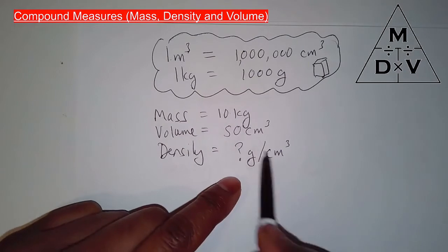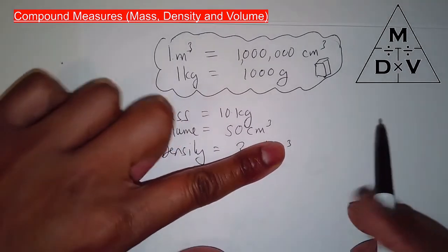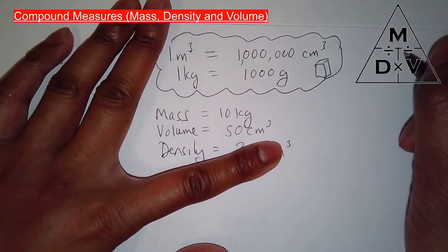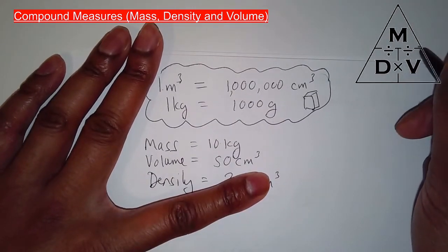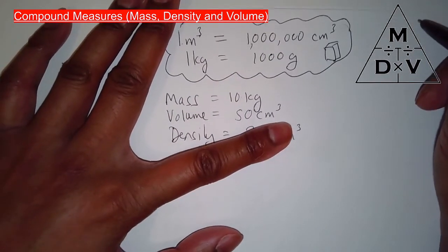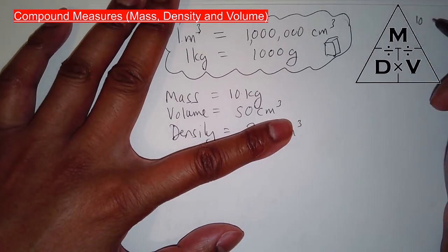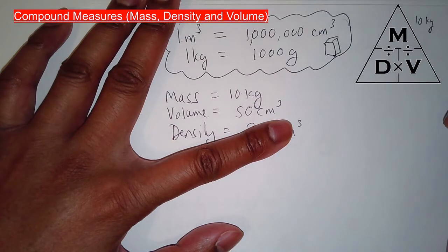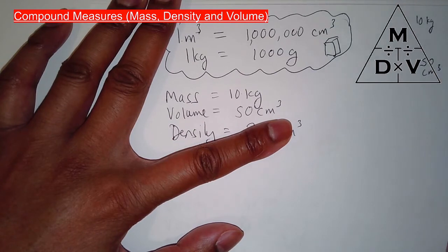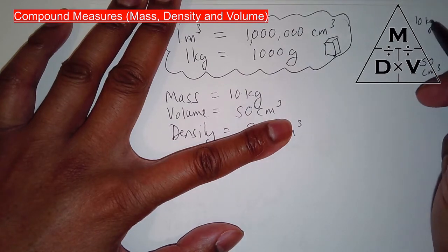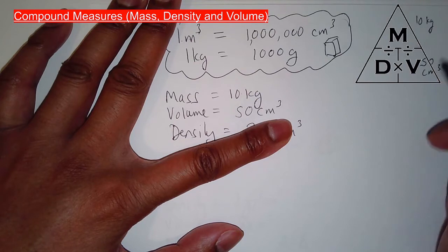If they didn't give us the units, if they didn't give us the units, I would have just done this. Mass over here, 10, 10 kilograms. Volume. I'll put here 50 centimeter cubed. I would have just done 10 kilograms divided by 50 centimeter cubed.